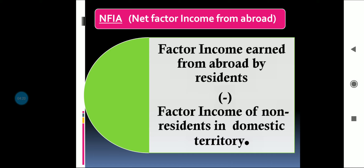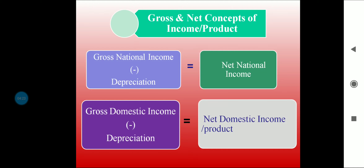Now we clarify the concept of gross and net. Gross national income, or GNP, when we deduct depreciation from it gives us net national income, or NNI. Similarly, gross domestic income, or GDP, when we deduct depreciation from it gives us net domestic income, or net domestic product. Depreciation has been explained in the basic concepts chapter.